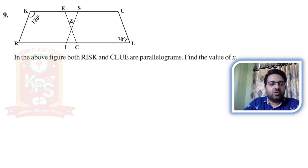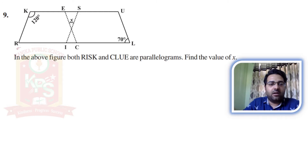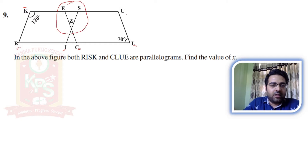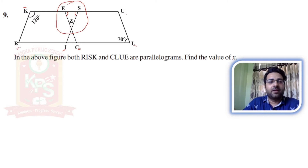Now coming to Question number 9. In the above figure, both RISK and CLUEQ are parallelograms — find the value of X. Here you are given two parallelograms, RISK and CLUEQ. You have to find X. The logic we will apply is: if we can find angle E and angle S in the triangle, then we can use the angle sum property to find X.